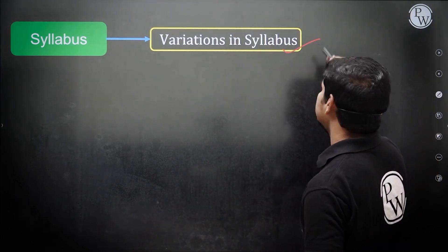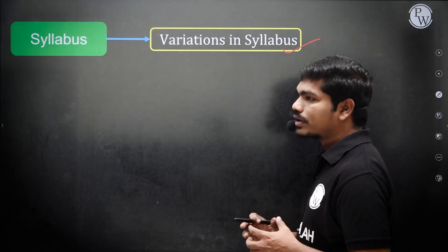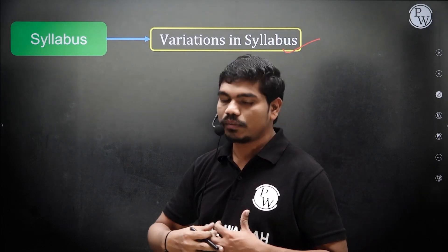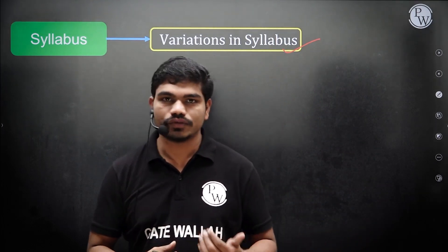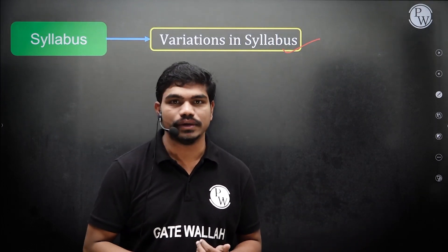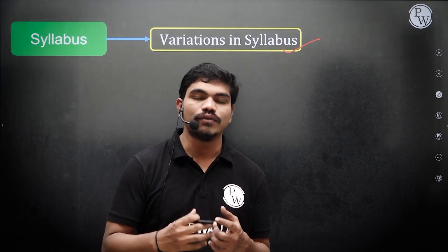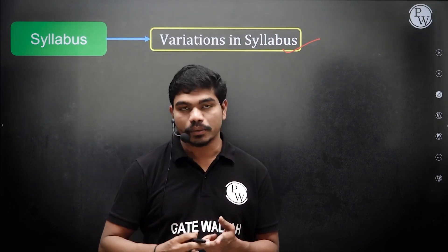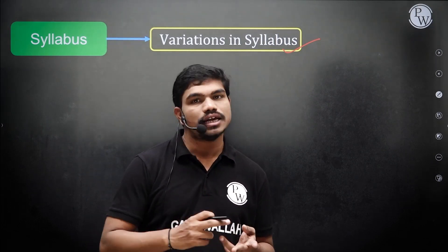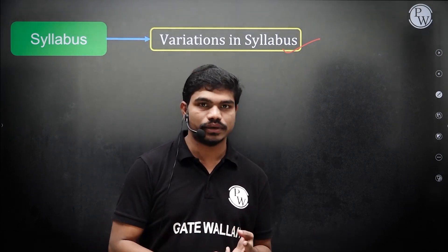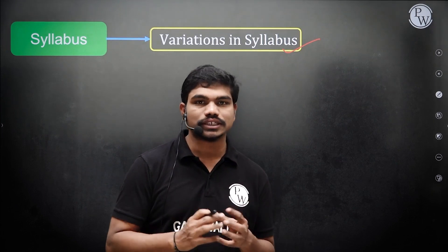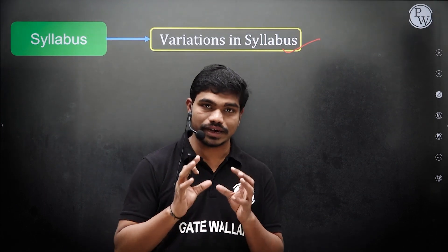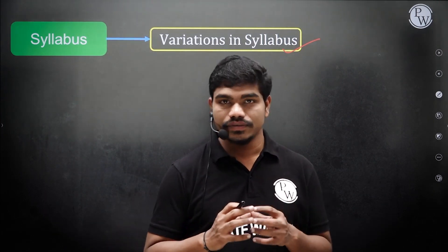For example, complex calculus is not for civil engineering students. For computer science, you have only linear algebra, probability and statistics, and single variable calculus. These syllabus variations must be clearly sorted out so you have a clear-cut idea of what applies to your branch.